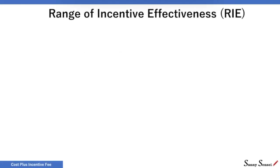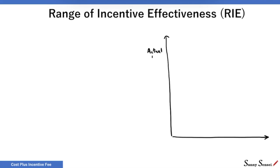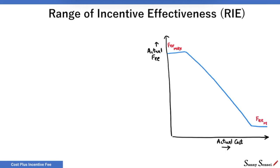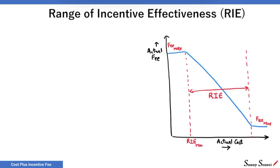This is how a plot of actual fee against actual cost looks like in a Cost Plus Incentive Fee Contract. We have an upper limit to the fee — the maximum fee. We also have a lower limit — the minimum fee. The region between these two limits is the range of incentive effectiveness, from RIE minimum to RIE maximum.